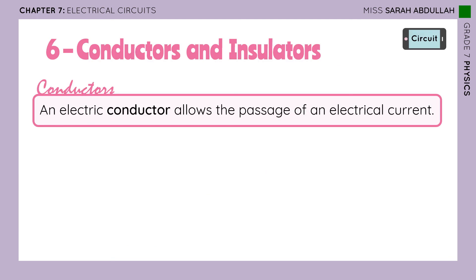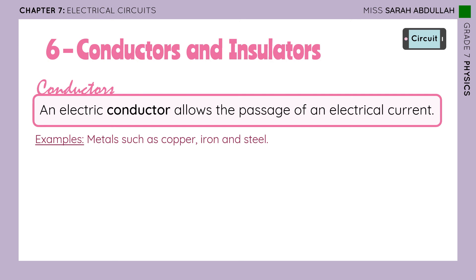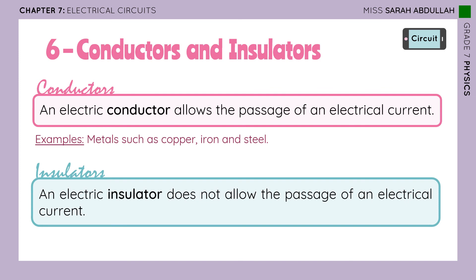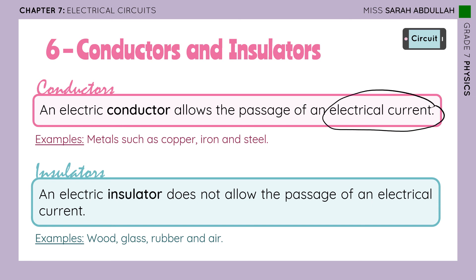An electric conductor allows the passage of an electrical current — it allows the current to flow through it. Examples include metals such as copper, iron, and steel — all metals, in fact. An insulator does not allow the passage of an electrical current. We saw this with the eraser, air, and the marker. Other examples of insulators include wood, glass, rubber, and air.